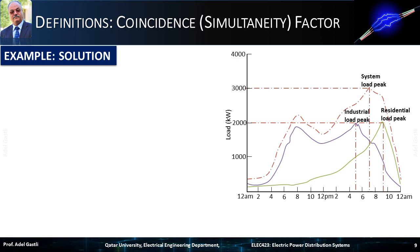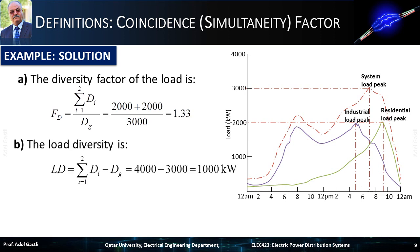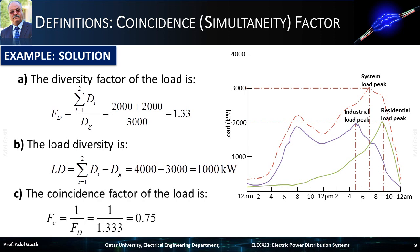To solve this example, we start by answering the first question about the diversity factor calculation. Since we have two similar peak loads — industrial and residential — of 2,000 kW each, and a total non-coincident load of 3,000 kW, we can find the diversity factor by applying its equation. This yields a diversity factor of 1.33. For the second question, the load diversity is calculated using this equation, giving a load diversity of 1,000 kW. Finally, the coincidence factor is determined as the inverse of the diversity factor, giving a coincidence factor of 0.75.